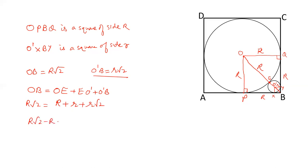Taking R common gives R times root 2 minus 1. Taking r common gives r times 1 plus root 2. So the ratio capital R over small r equals root 2 plus 1 over root 2 minus 1, and small r over capital R equals root 2 minus 1 over root 2 plus 1.